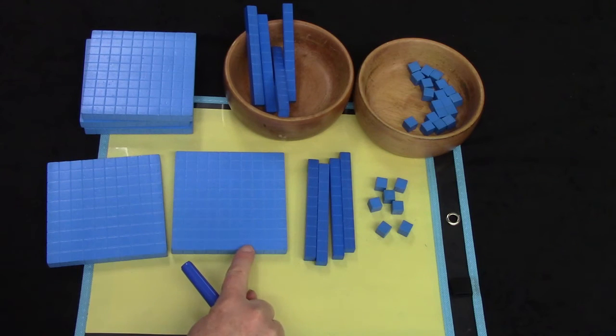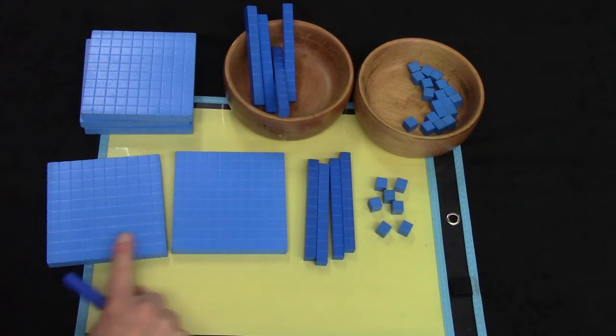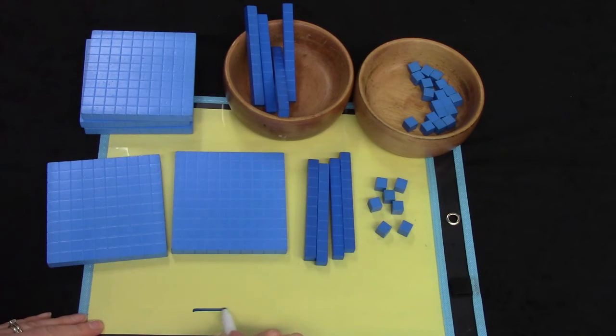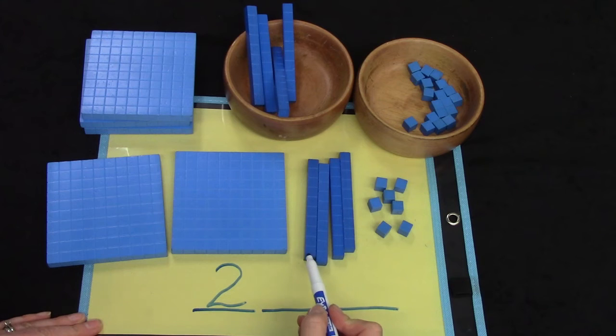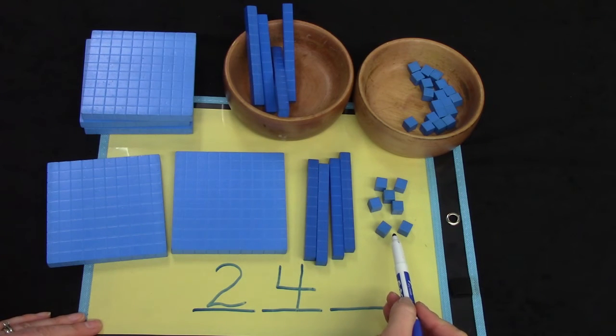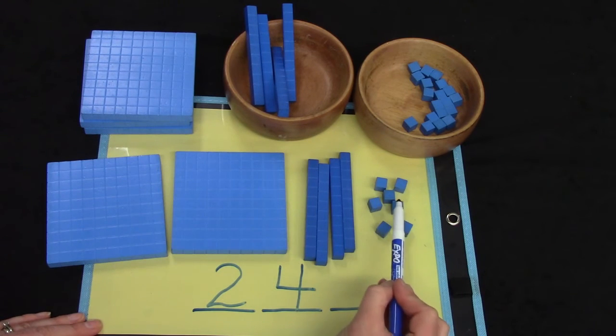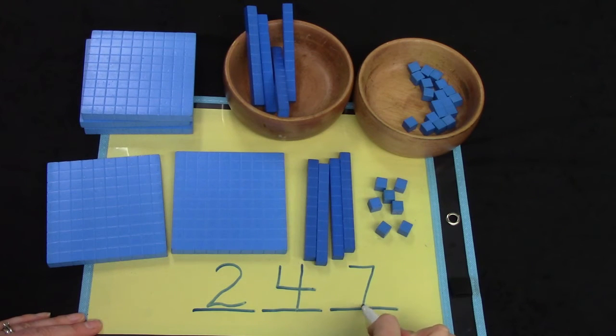First, how many hundreds do we have? We have one, two hundred. So if we were to do a three-digit number, we would put a two in our hundreds place. How many groups of 10 do we have? One, two, three, four. Or 10, 20, 30, 40. Our four is going to go in our tens place. And how many single ones do we have? We have five, six, seven. Our base 10 blocks represented the number 247.